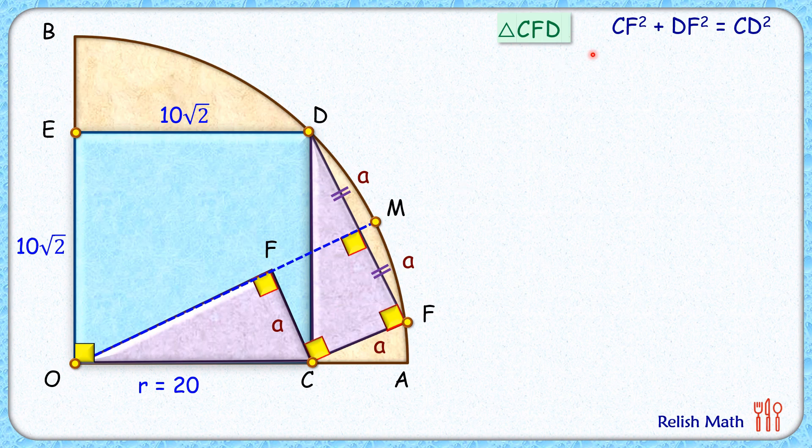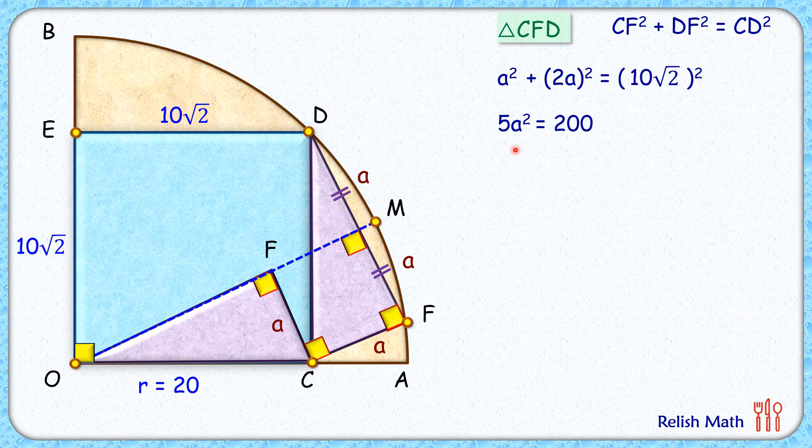Let's square both sides and we'll solve it to get the value of A² as 40. Now we'll use A² in further steps, so we are not finding A here.